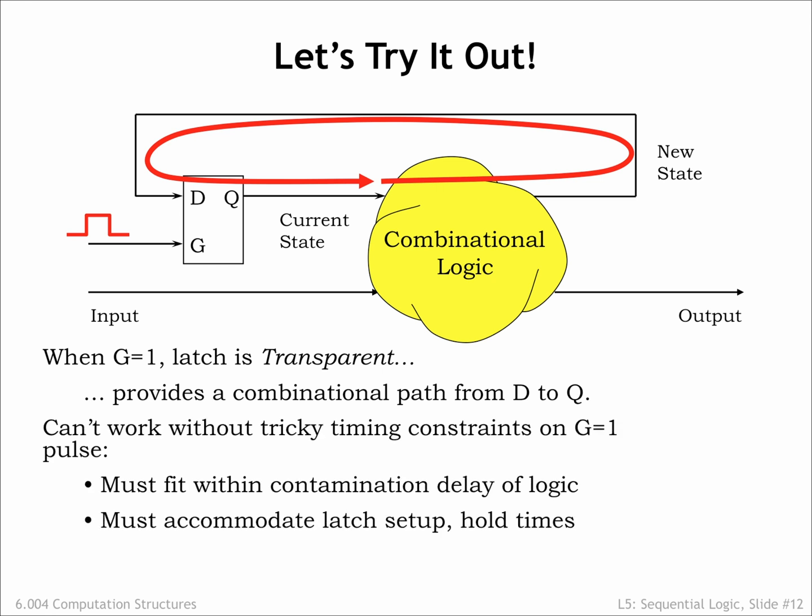So to make this work, we need to carefully time the interval when G is high. It has to be long enough to satisfy the constraints of the dynamic discipline, but it has to be short enough that the latch closes again before the new state information has a chance to propagate all the way around the loop.